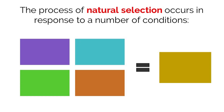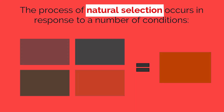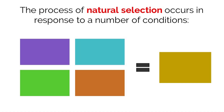Subtopic 5.2 is all about natural selection. To begin, natural selection is defined as the process whereby organisms that are better suited to live in their environment tend to survive and reproduce more offspring. The two key words here are 'process' and 'natural.' This is a process that leads to evolution, which means it is not itself the definition of evolution.